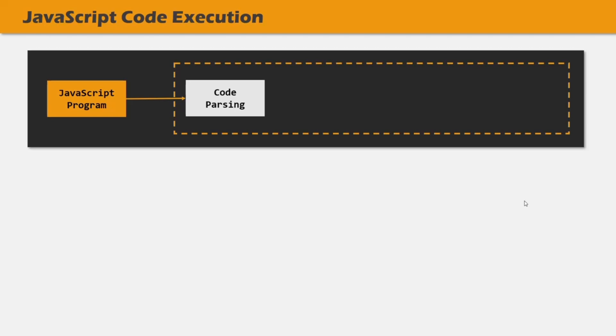However, if everything is right and there is no syntax error, the parser produces a data structure known as an Abstract Syntax Tree, or AST. For a high-level understanding, the JavaScript engine splits up each line of code into pieces that are meaningful to the language, like the const or the function keyword. Then it saves all these pieces into a tree-like structure. This resulting tree will later be used for generating the machine code, and that tree is called an AST.